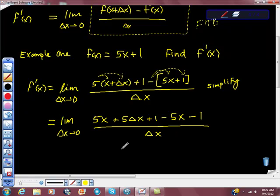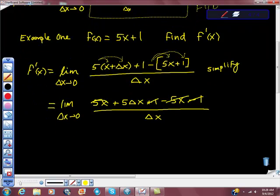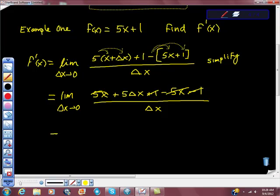Now what? Yeah, get rid of common factors, common elements here. So we have positive 5x here, we have negative 5x here. They cross out, don't they? What else? 1 and the negative 1. I'm going to write this thing one more time. I'm going to get is equal to the limit as the change in x approaches 0 of 5 change of x over change of x.